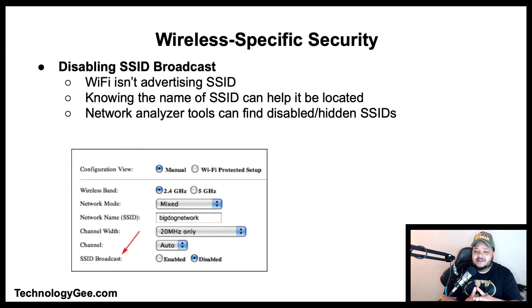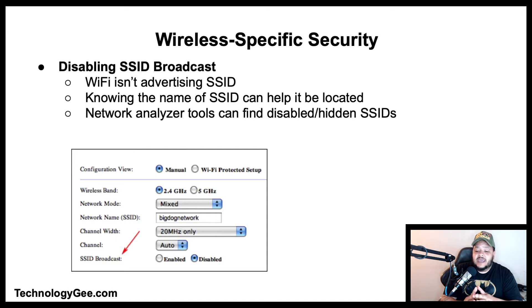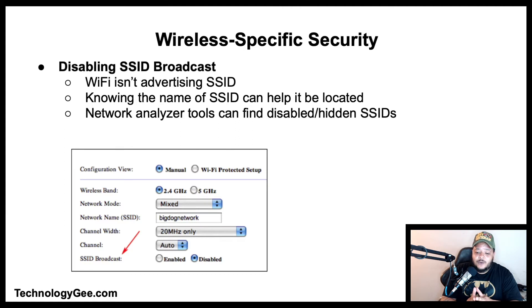Disabling SSID broadcast essentially means your Wi-Fi networking devices aren't advertising the SSID, so a casual Wi-Fi user looking for a network won't see the name of the disabled SSID on their smartphone or laptop. However, just because the SSID is disabled does not mean it cannot be located. One way is to simply know the name of the network; another is to use a network analyzer tool which can see a disabled SSID. So while CompTIA suggests disabling SSID is a good security measure against casual users, it will not prevent a hacker from discovering the network name to gain unauthorized access.